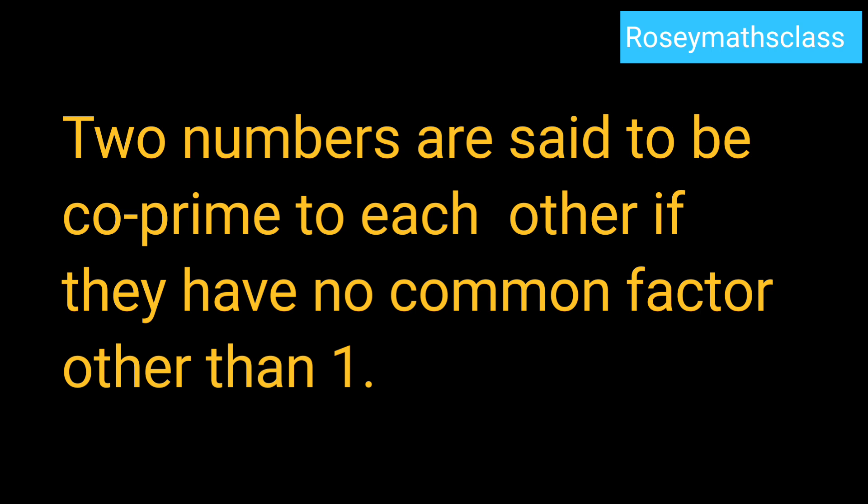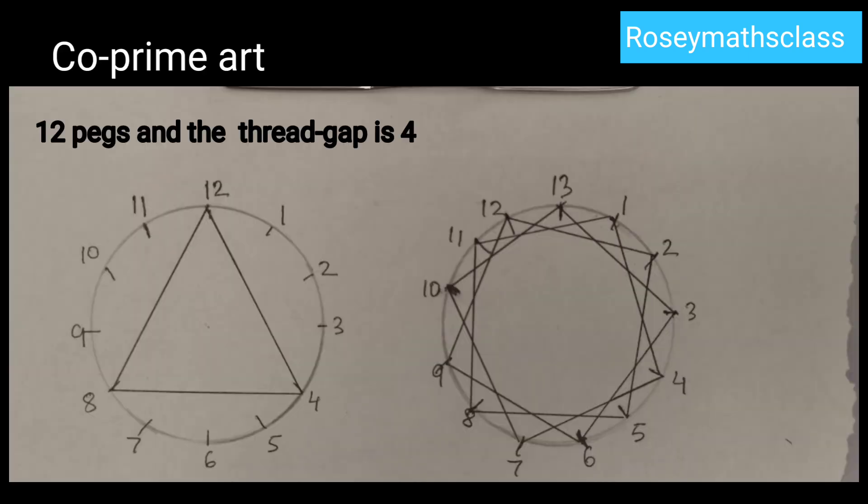After this you have co-prime art, also called thread art. Four diagrams are given. The first diagram has 12 pegs—pegs means nails or pins. And the thread is tied to every 4th peg. So in the first diagram you have 12 pegs and the thread is tied to every 4th peg.